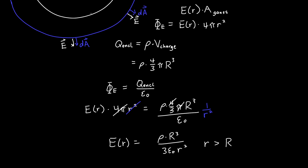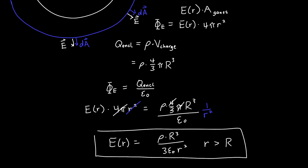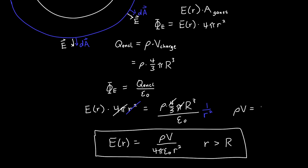We can rewrite this: instead of expressing in terms of big R, express in terms of the volume of the charged sphere. Then E(r) becomes rho times the volume divided by 4π epsilon naught r squared. Since rho times the volume is just the total charge Q, this is exactly the equation for the electric field of a point charge. Any spherical charge distribution viewed from outside looks like a point charge equal to the total charge Q.